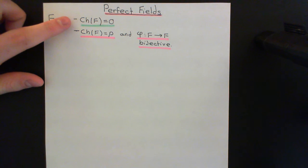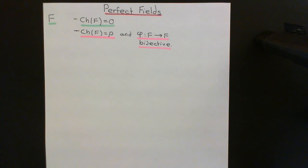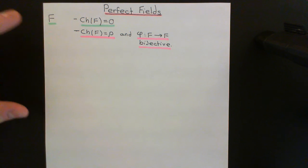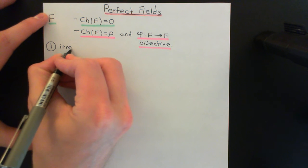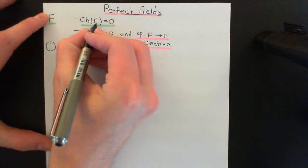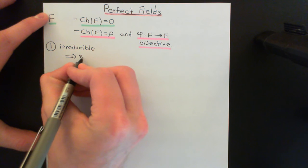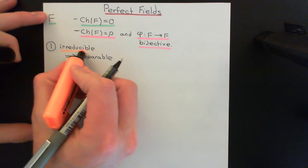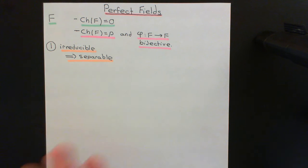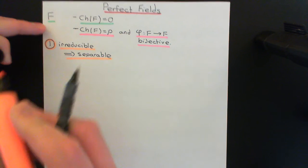If you've got a field of characteristic zero, then Theorem 1 and Theorem 2 — as we called them in the video on separable polynomials over a field of characteristic zero — are going to be true. Theorem 1 states that if a polynomial is irreducible in the ring of polynomials over a field of characteristic zero, then it is also separable. So irreducible implies separable; all irreducible polynomials were separable, and we showed this holds true.